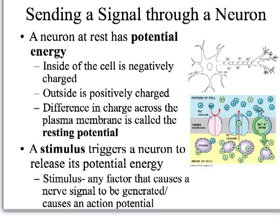A neuron at rest has potential energy. Inside of the cell it is negatively charged, and outside of the cell it is positively charged. This difference in charge across the plasma membrane is called the resting potential, because that's the electrical potential across the membrane when a neuron is not sending a signal.